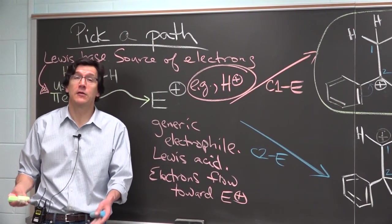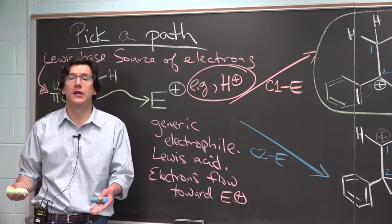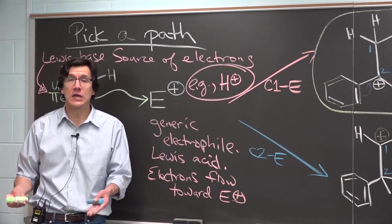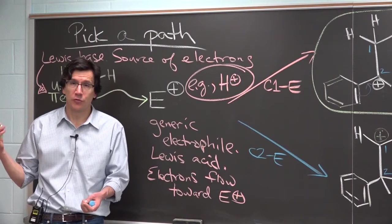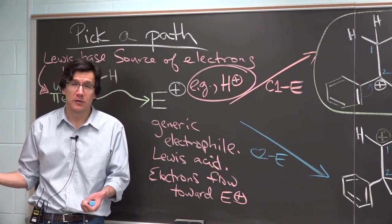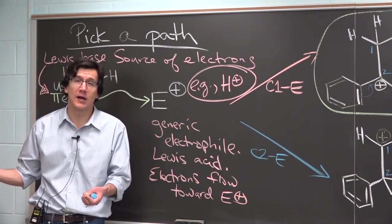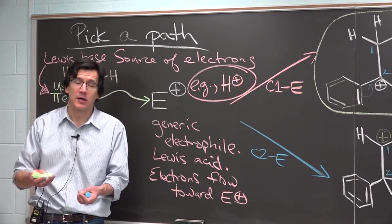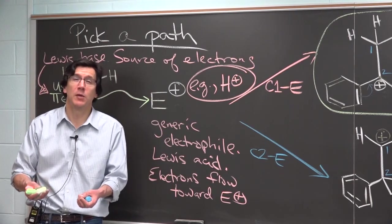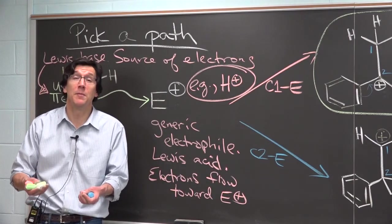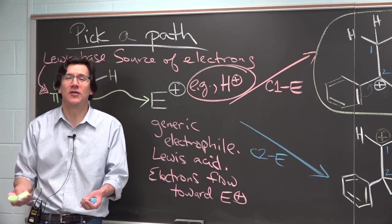This is exactly the microscopic reverse of the last step of the E1 mechanism, which was removal of a proton from next door to the carbocation to make a double bond. Now what we're doing is we're starting from the double bond and we're putting the proton back on to generate a carbocation.